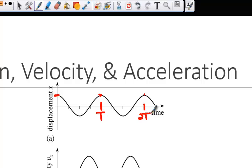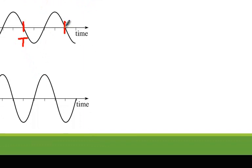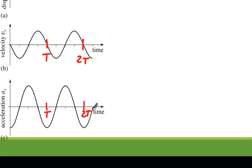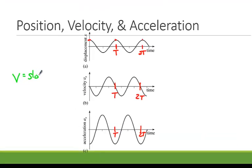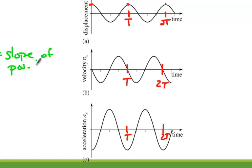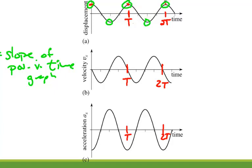Looking down at our velocity graph, we have T and 2T, and the same on our acceleration graph. Remember that velocity is equal to the slope of the position versus time graph. When our displacement is at a maximum, we see that our velocity is zero at those places, which makes sense. At the maximum amplitude, the simple harmonic oscillator is changing direction, and if it's changing direction, it must stop when doing so.